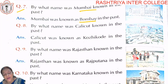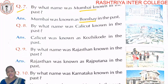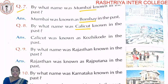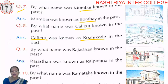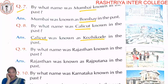Question number eight: By what name was Calicut known in the past? Calicut was known as Kozhikode in the past. Calicut ko puraane samay mein Kozhikode ki naam se jaana jaata hai.